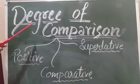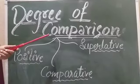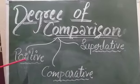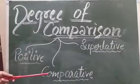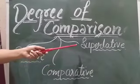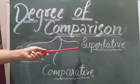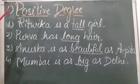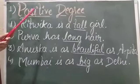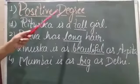The three degrees of comparison are Positive, Comparative, and Superlative. Let us start with Positive degree.